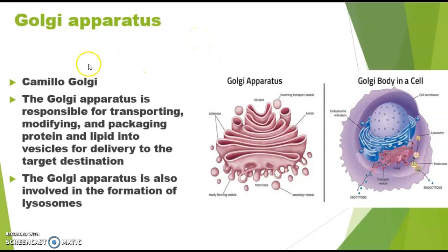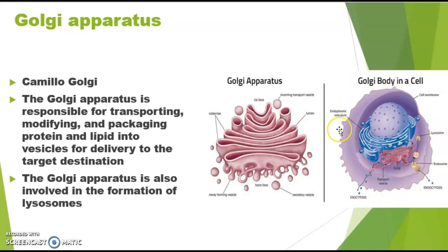The Golgi apparatus was first discovered by a scientist while experimenting on the nervous system — they were experimenting on nerve cells and found this organelle. Now look at this picture: this is the Golgi apparatus. It is a flattened sac or membranous structure which is just next to the endoplasmic reticulum. In the cell, you can see the big nucleus and here is the endoplasmic reticulum, and just next to it is this expanding structure of the endoplasmic reticulum.